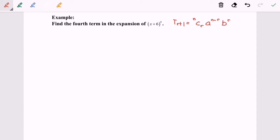The second task is to extract the info. So here the question asks us to find T_4 and the expansion is (x+6)^8.